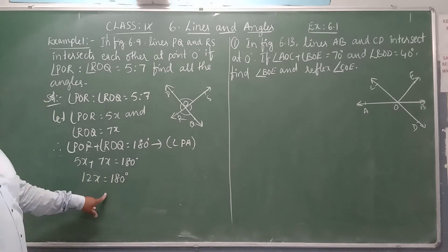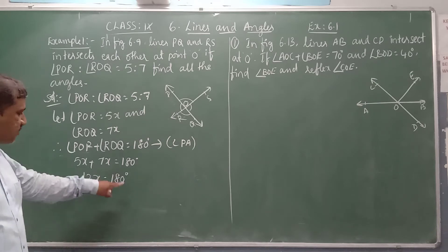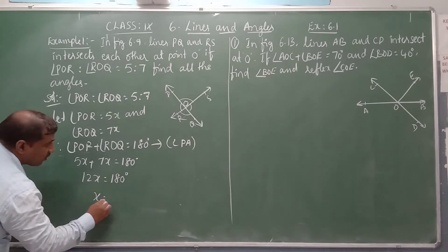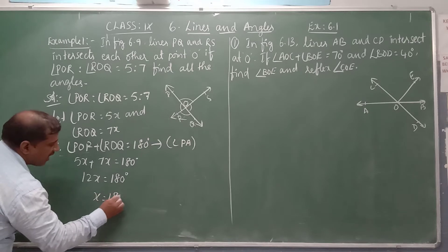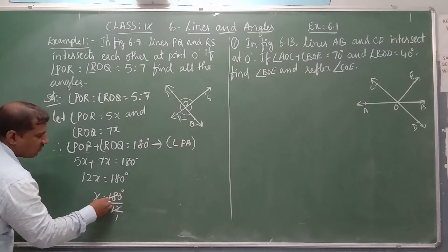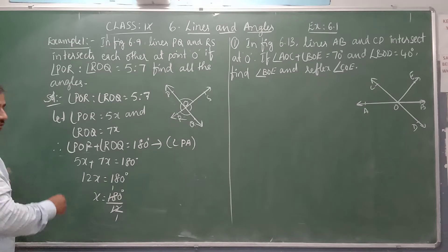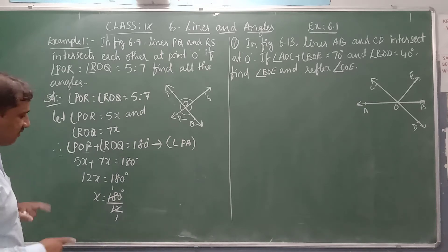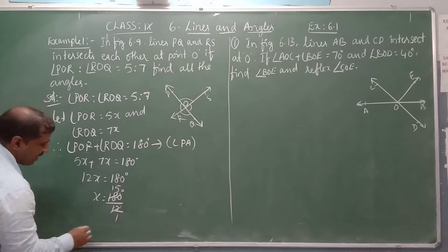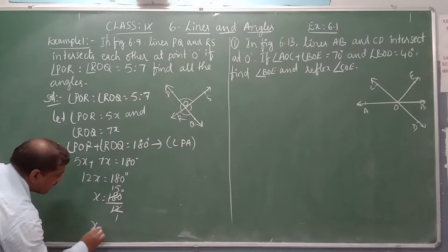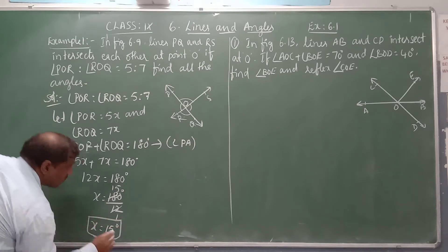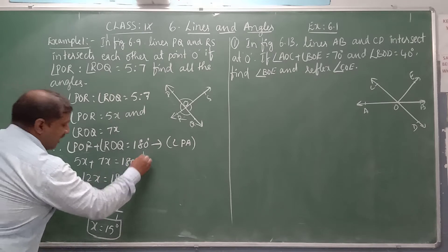Now transpose 12, which is multiplying — when we transpose to the other side, it divides. So X equals 180 degrees divided by 12. 12 fives are 60, so X equals 15 degrees.